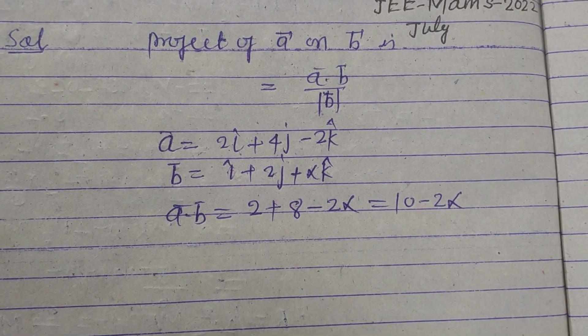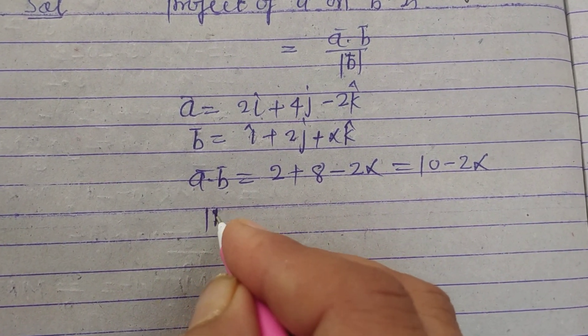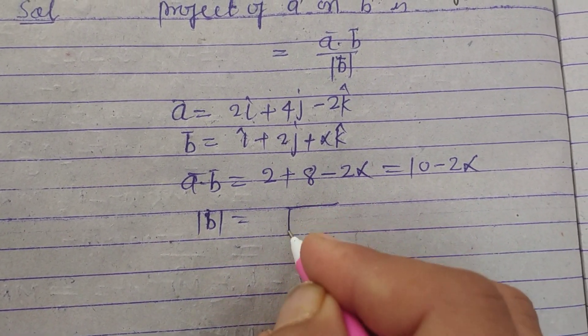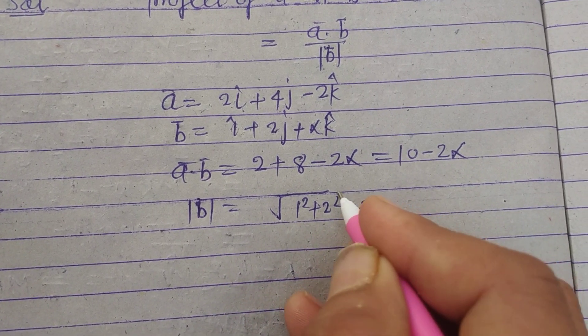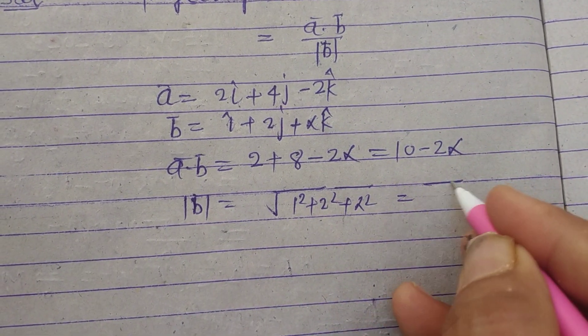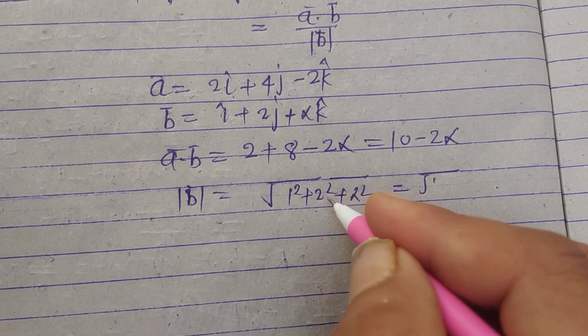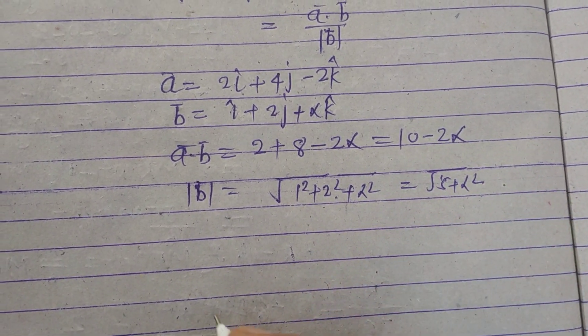A dot b is 10 minus 2 alpha. Modulus of b, so this is under root 1 square plus 2 square plus alpha square. So this is 1 square 1, 4, 5 plus alpha square.